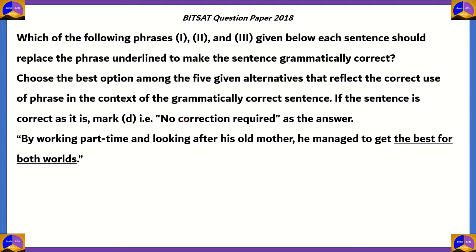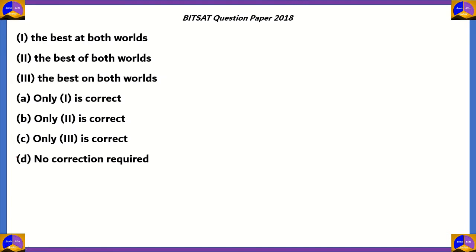In this question, it's vital that we look at the prepositions. The first is 'best for both worlds' — here 'for' is the preposition that looks for its object, meaning his situation was best 'for' his mother as well as the job. While it was good for his mother, it might not be good for the job, which might have wanted him to work full-time. Therefore, 'he managed to get the best for both worlds' is not correct, so we can eliminate option D — no correction required. Now, option C says 'the best on both worlds.'